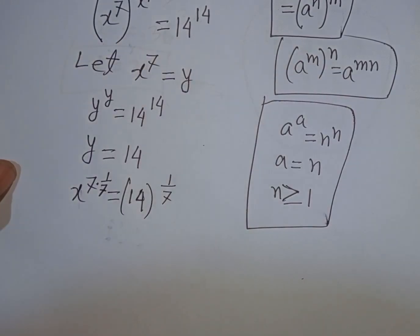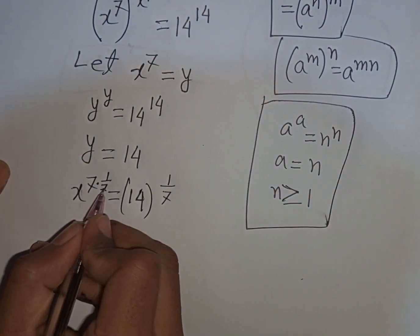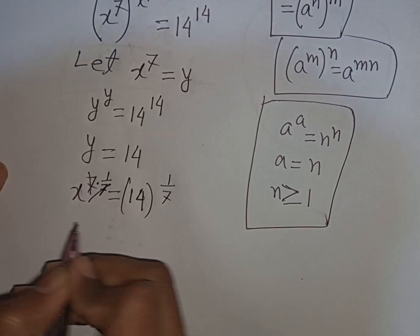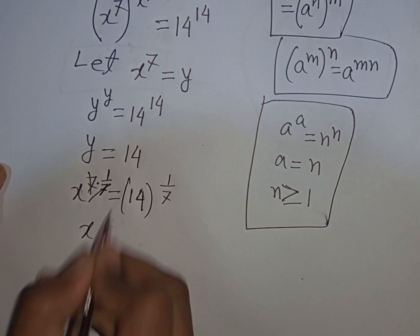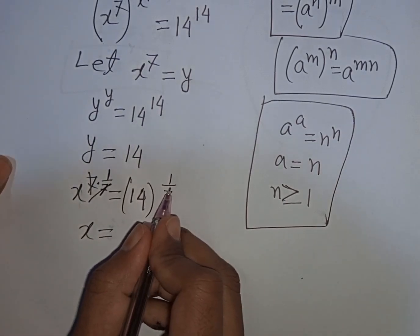Now we see the 7 and 7 will be cancelled, so we have x^1, which is the same as x, equals 14^(1/7).